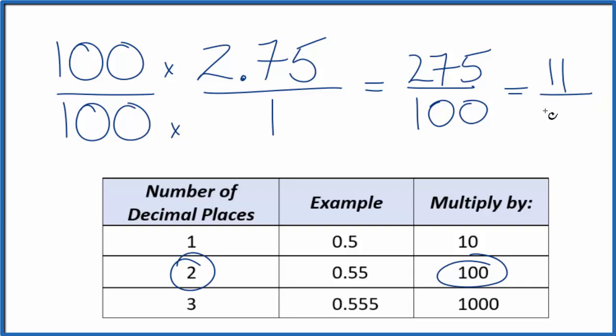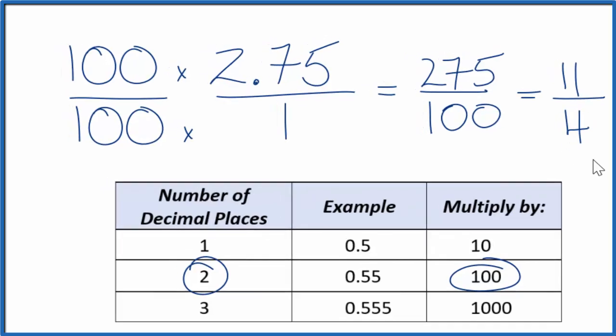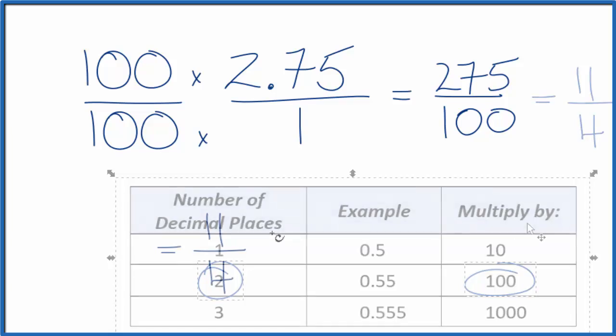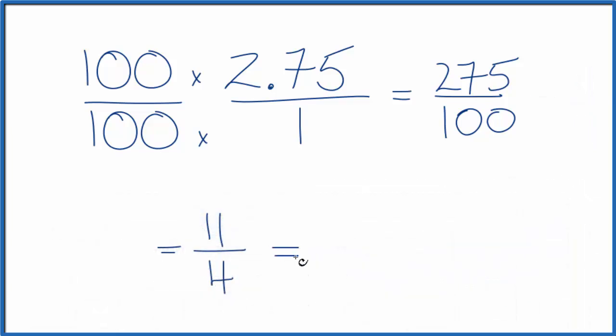This is an improper fraction. Let's give ourselves some room and convert that to a mixed fraction. So 11 fourths as a mixed fraction: 4 goes into 11 twice, 2 times 4 is 8 with 3 left over. So we end up with the mixed fraction 2 and 3 fourths.